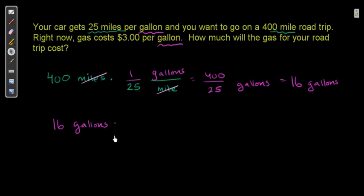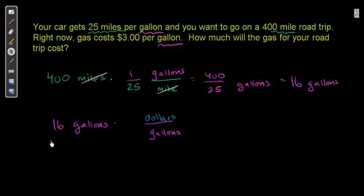The cost is $3 per gallon. Using the dollar-to-gallon ratio of $3 per gallon, with 16 gallons the total comes to $48.